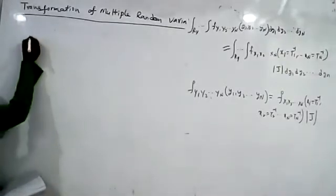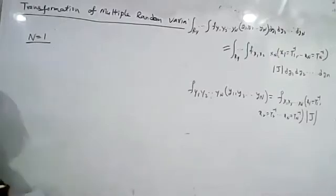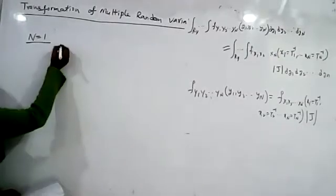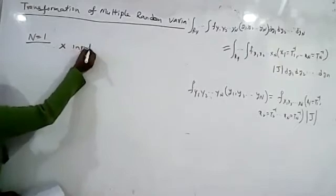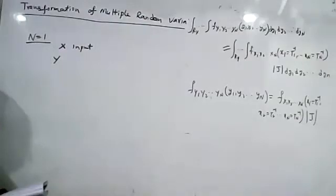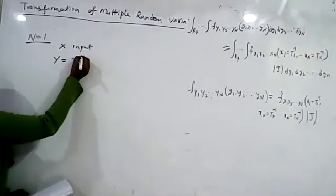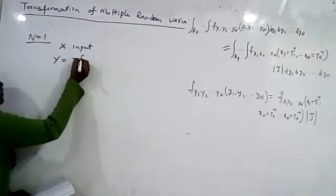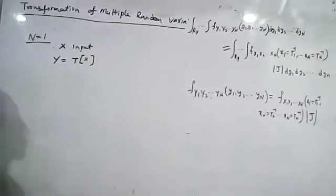Now we discuss the transformation of only one random variable, taking n equal to 1. In this case, x is the input random variable and it is transformed to the random variable y. y is the transformed random variable, and we write y = T(x).